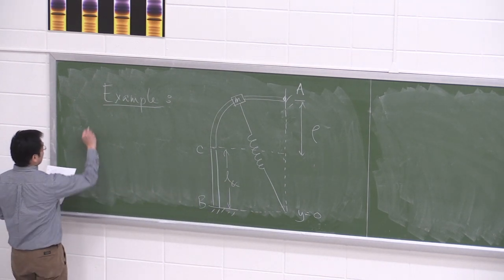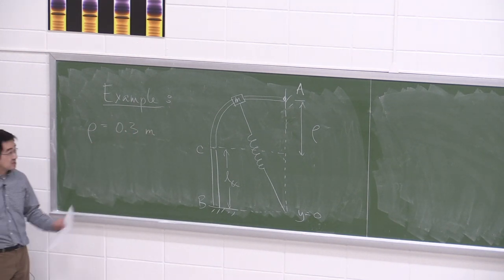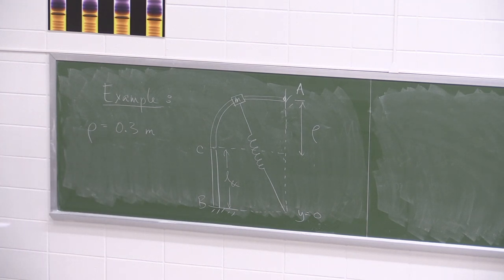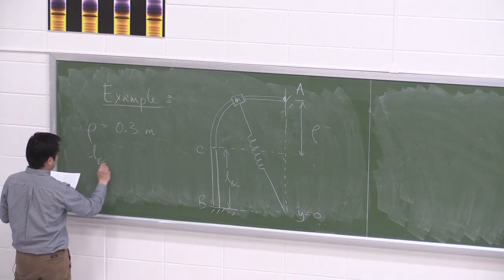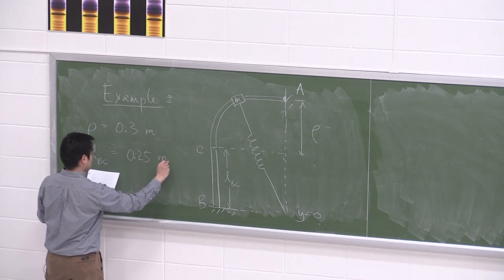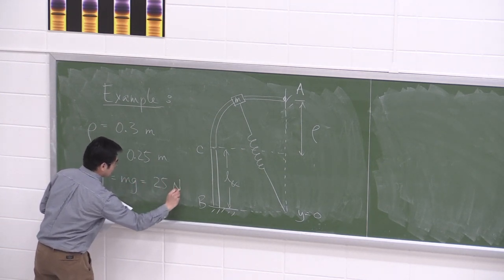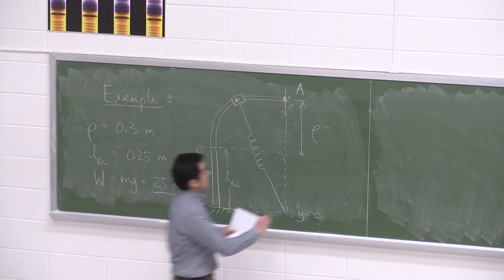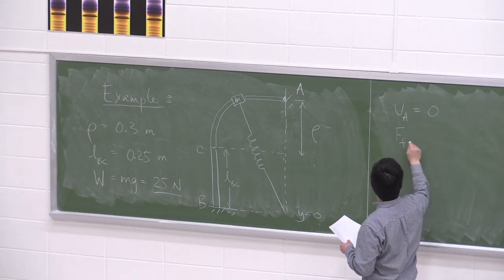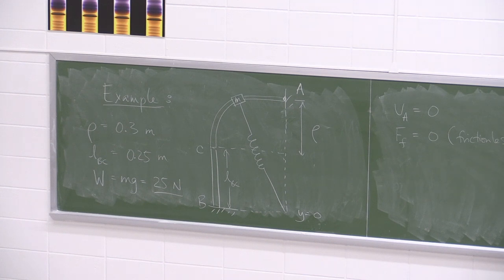I'll give the given information. I'm using the Greek letter rho to indicate a radius of curvature — imagine this as a quarter circle with radius rho equal to 0.3 meters. The distance between B and C, the straight part of the rod, is 0.25 meters. The weight (mg) of the slider is 25 newtons. The slider starts from rest, so VA equals zero, and there's no friction force between the slider and the rod — it's frictionless.